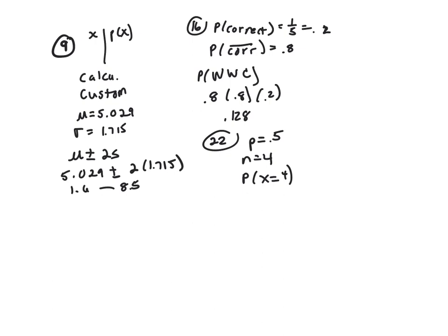And your N is 4. And your P is 0.5. And you want N equal to 4. And then click on compute. And that gave you 0.0625.